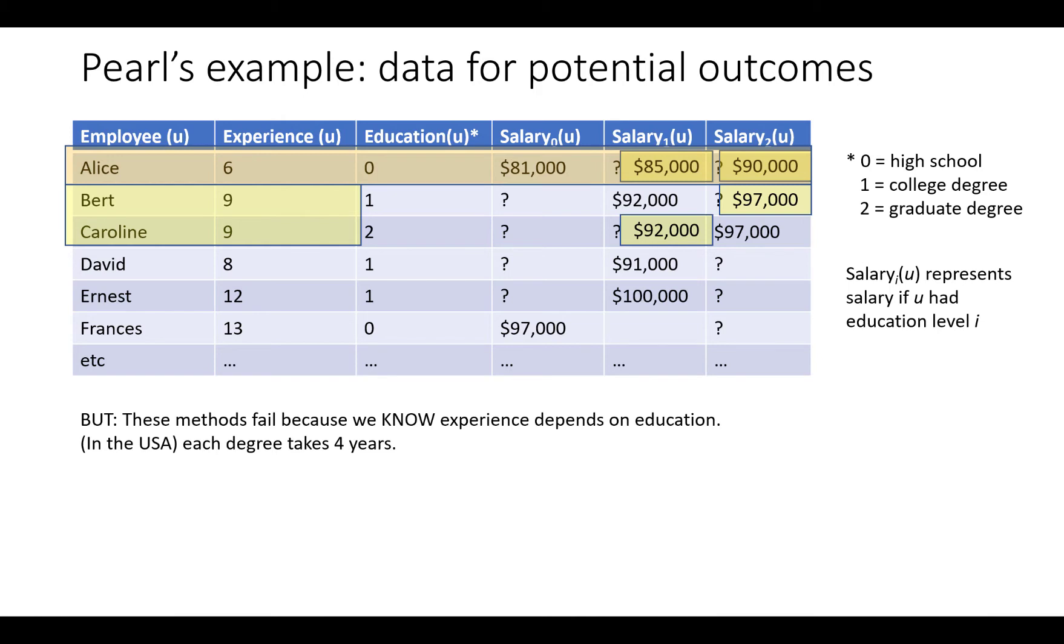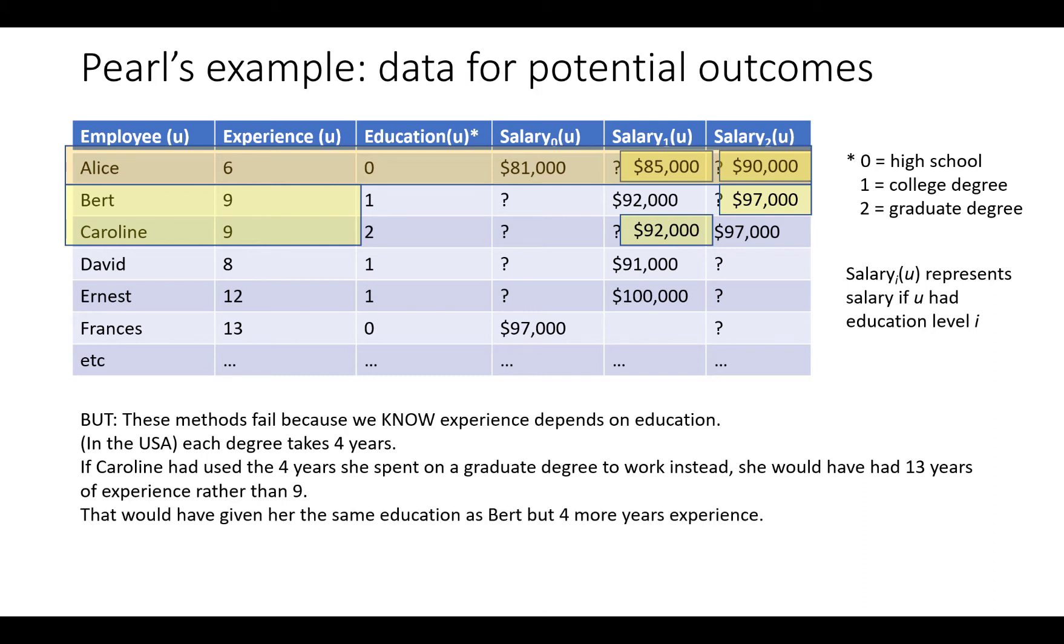In the USA, each degree takes about four years. So let's look at Caroline. If she used the four years she spent on a graduate degree to work instead, she would have had 13 years of experience rather than nine. That would have given her the same education as Bert, but four more years experience.